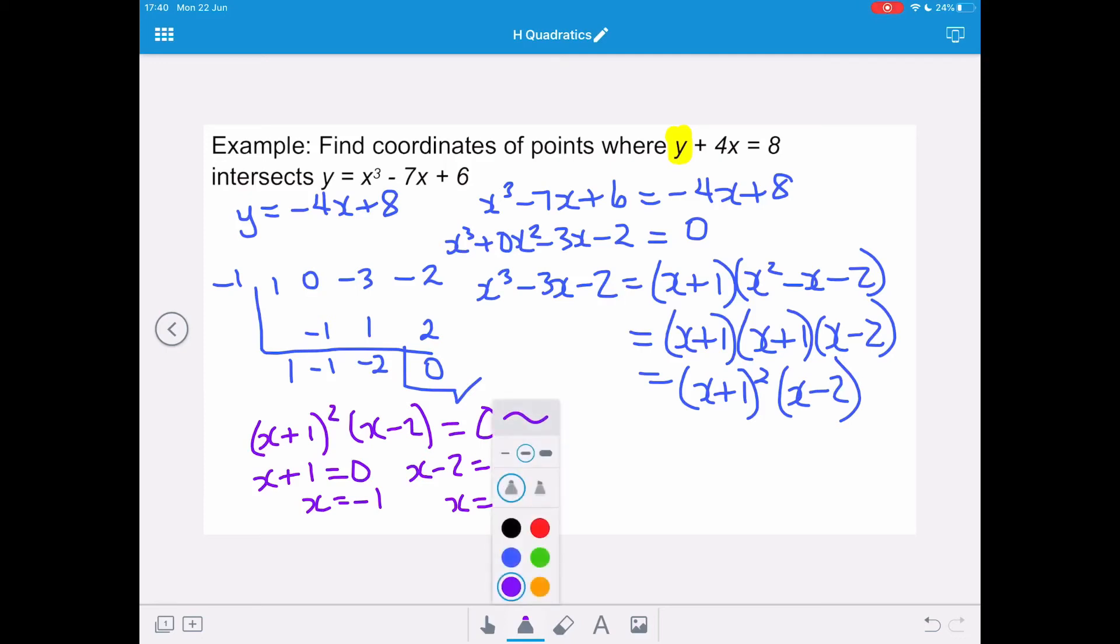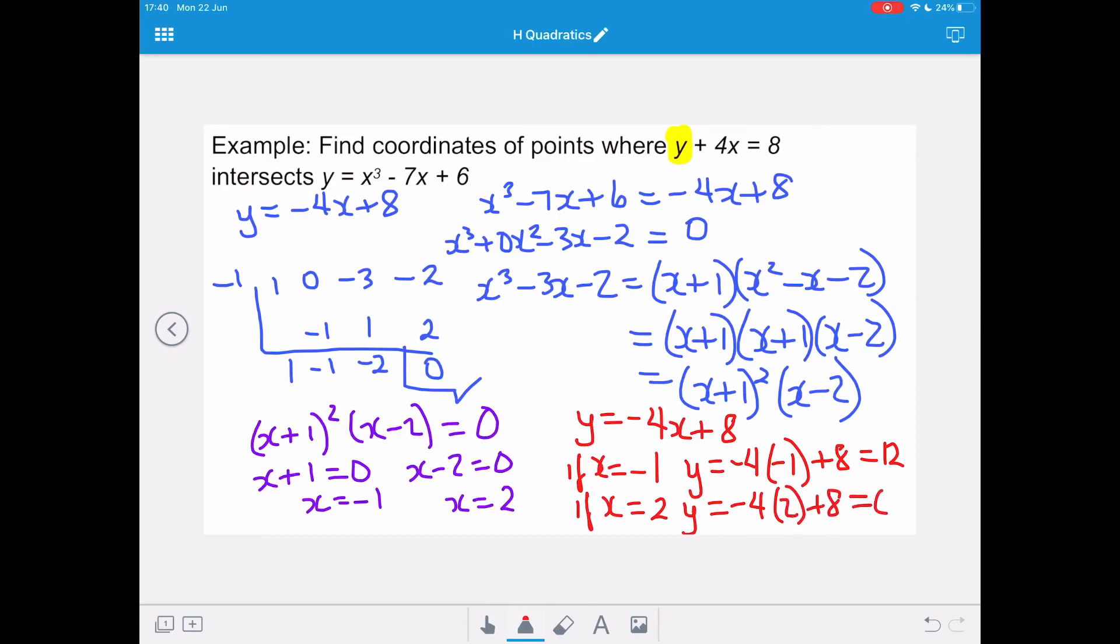Now to find our y-coordinates, we want to substitute that back into our rearranged line of y equals negative 4x plus 8. And so if x equals negative 1, then y is going to be negative 4 times negative 1 plus 8, which gives us 12. And if x equals 2, then y is going to equal negative 4 multiplied by 2 plus 8 equals 0.